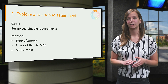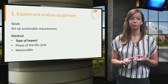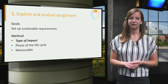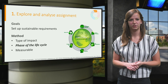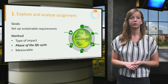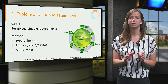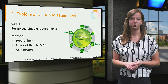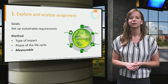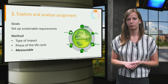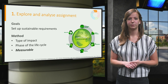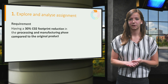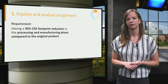First of all, define what impact you are talking about. This could be for example water usage, toxic emission or CO2 footprint. Secondly, specify what phases of the design cycle you are looking into. Are you analyzing the full life cycle or only the impact in the processing phase? And last but not least, make it measurable so that it can be validated. With these steps we could for example get the following requirement.